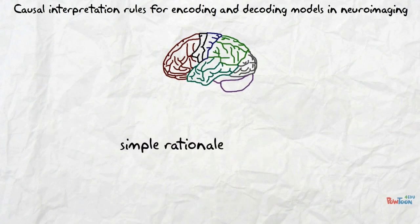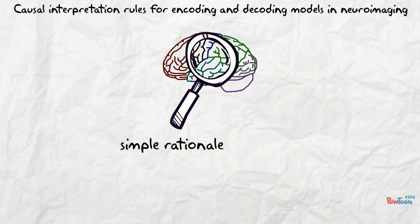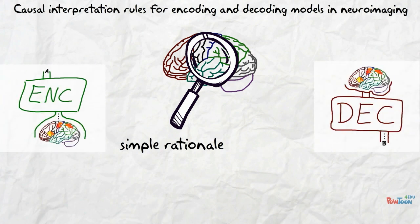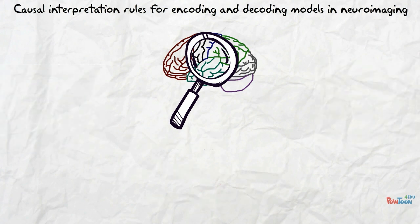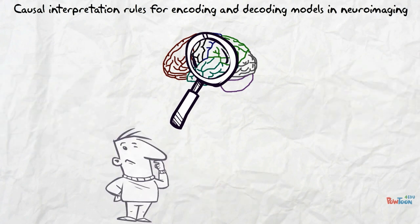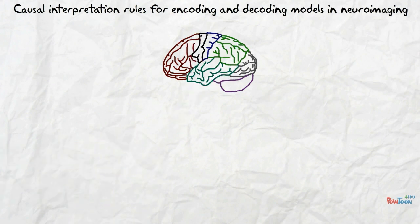We provide a simple rationale on which causal insights can be inferred — what we can learn from encoding and decoding models in neuroimaging — without relying on restrictive assumptions and, importantly, without being misled by intuition. We hope our work contributes to a constructive habit of critically reflecting on methods to obtain causal insights from neuroimaging studies.